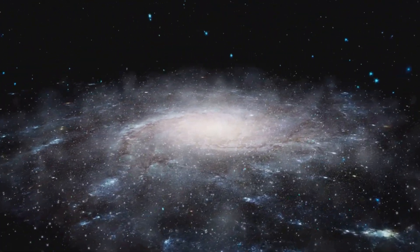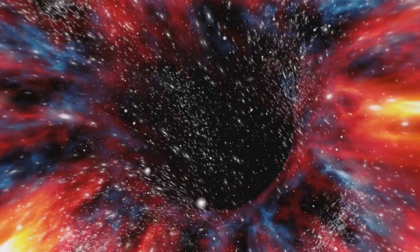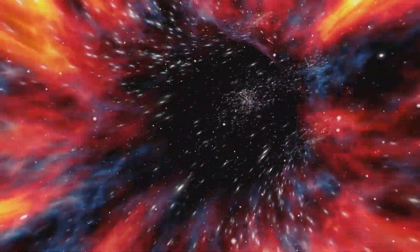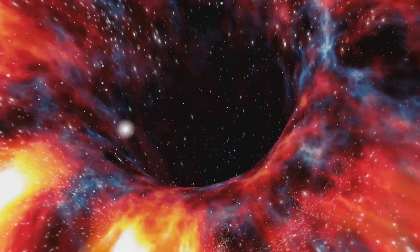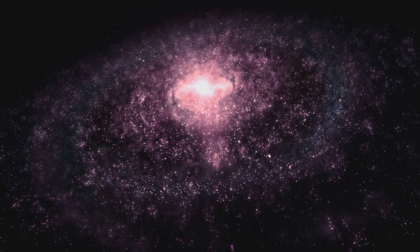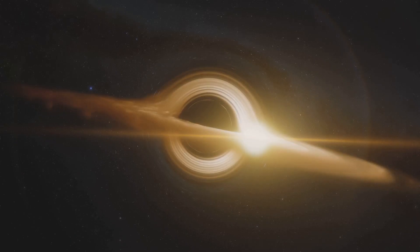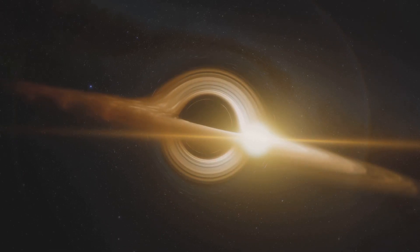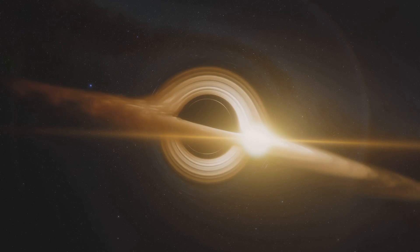But what makes the Great Attractor so attractive? Well, it's a concentration of mass thousands of times greater than our galaxy. This enormous mass bends the very fabric of space-time, creating a gravitational sink that draws in everything within its reach. But here's the kicker, we can't actually see it. It's hidden behind the Zone of Avoidance, a region of space obscured by the Milky Way's dust and starlight.